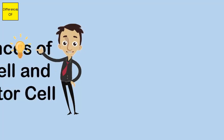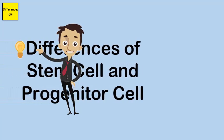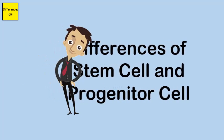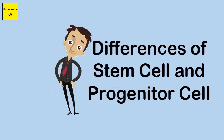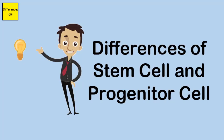Difference between stem cell and progenitor cell. Stem cells are reserve cells. Progenitor cells are biological cells.